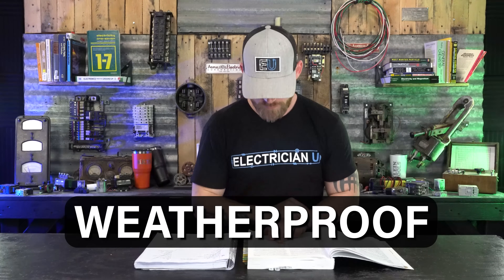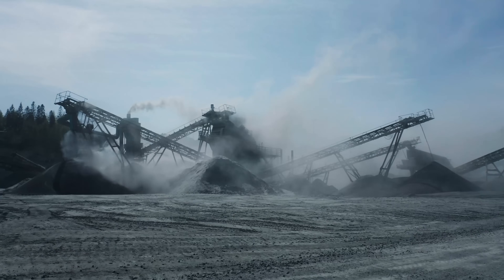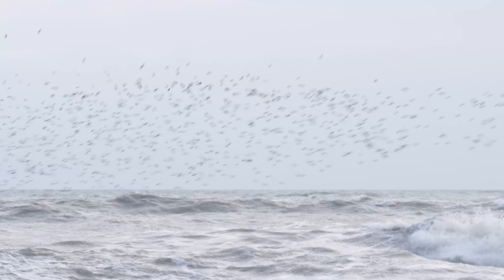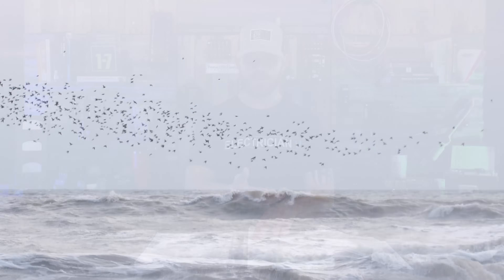Next we have weatherproof. Weatherproof is constructed or protected so that exposure to the weather will not interfere with successful operation. So that could be blowing dust, snow, salt from the ocean, salty air, rain — any of those things that are basically exposed to the weather and the elements.